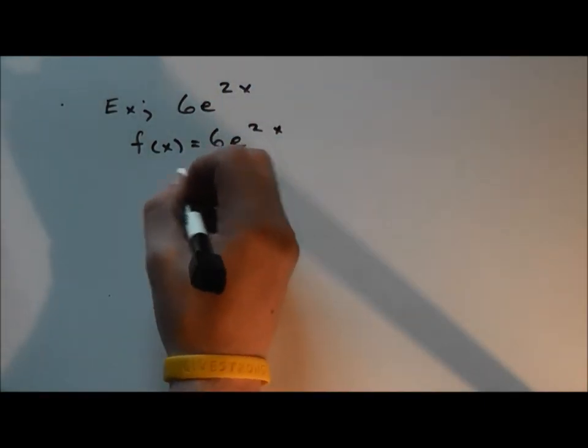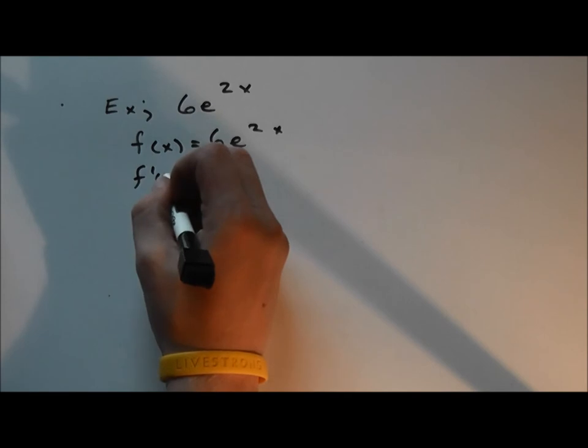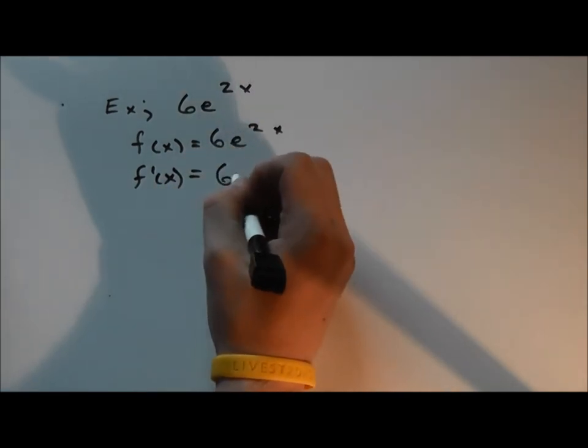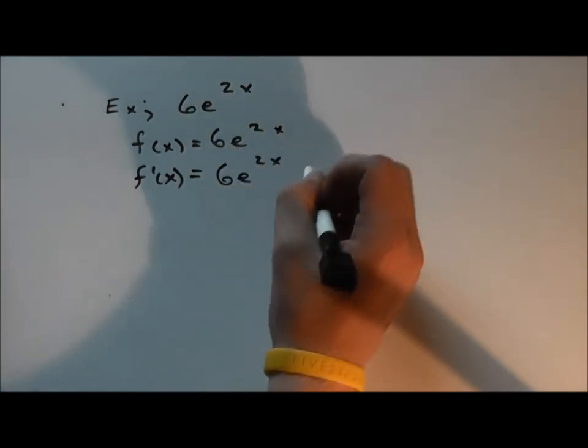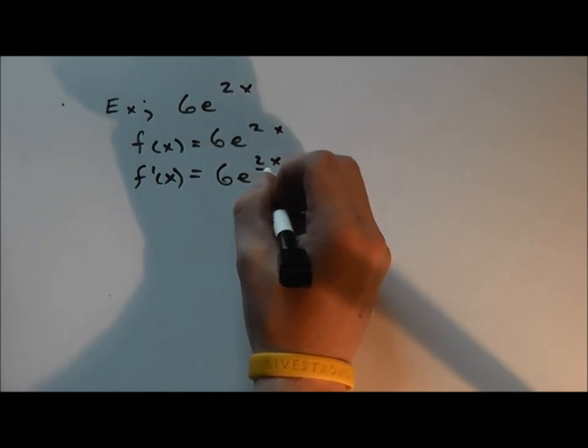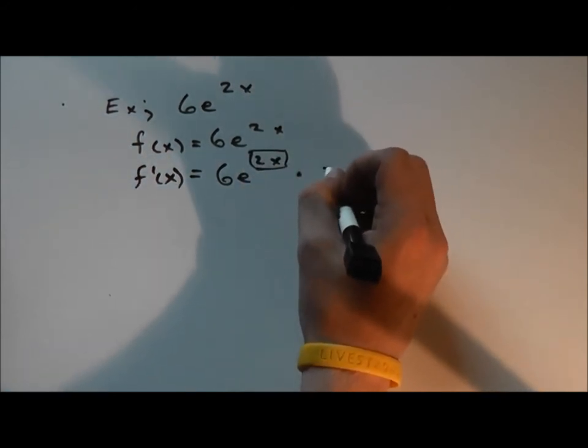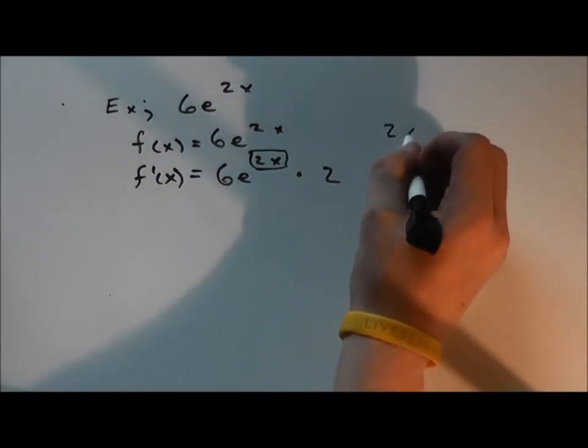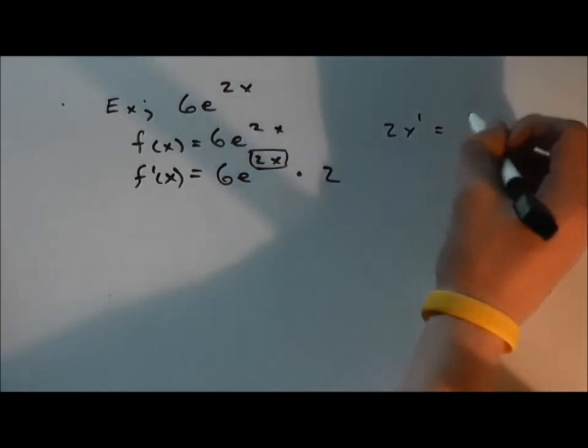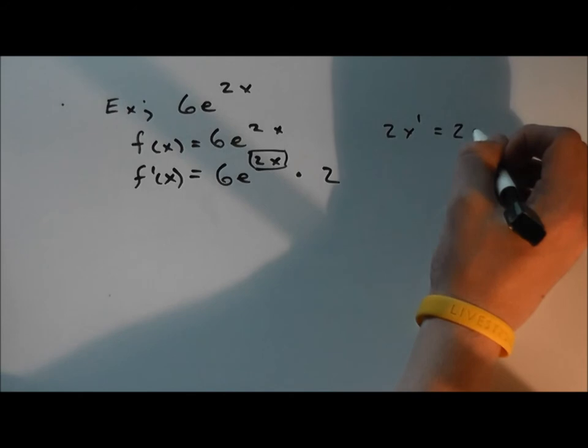So, we're going to apply that rule to this example. Keep this all the same. The derivative of this is 2, as 2x to 1, take the derivative of that, that equals 2.